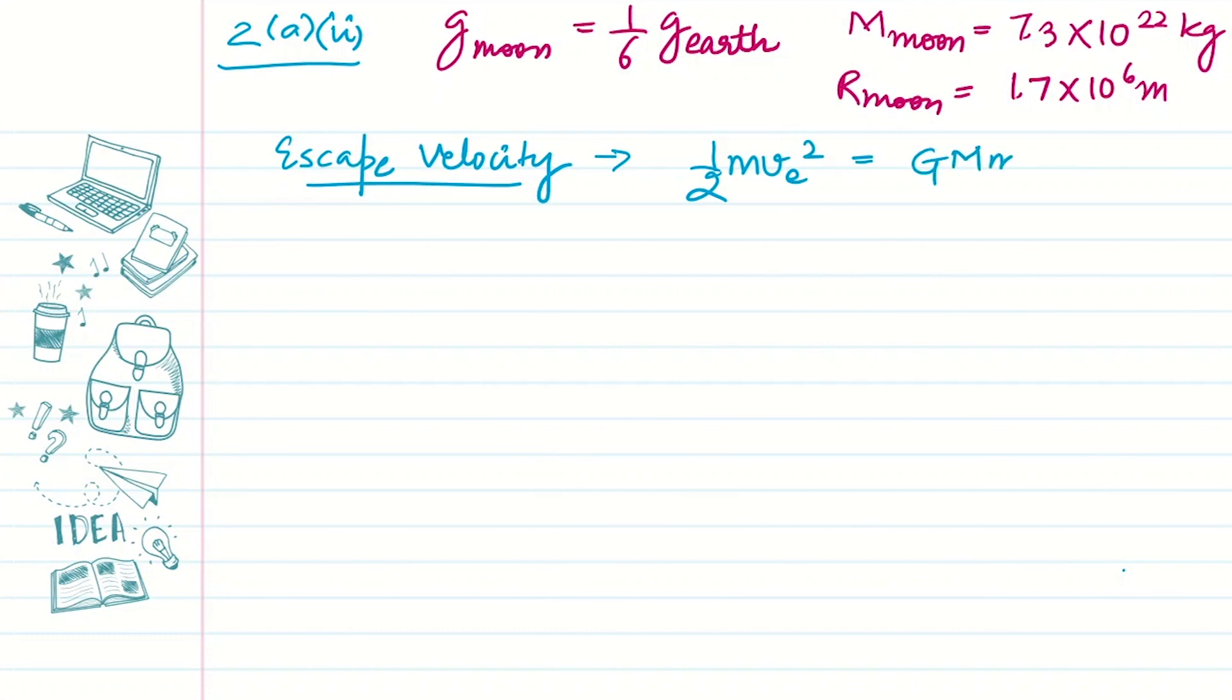We just need to get out of the gravitational pull. So this small m will cancel out. So the escape velocity is only dependent upon the particulars of the planet, not on the body that we have to get out of the gravitational pull. So this is the escape velocity relation.